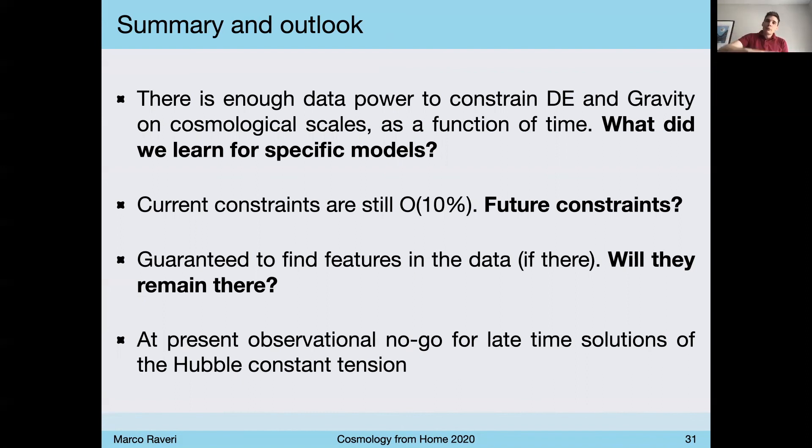Filling up the gap, the bottom-up approach of going without theoretical guidance from the data to theories. And current constraints on dark energy and gravity in full generality are still order of 10%. And I think this is the perfect space to gauge the performances of future experiments, because if we have cosmological observation at a specific range of times and scales, those will show up in improved constraints at those times and scales.